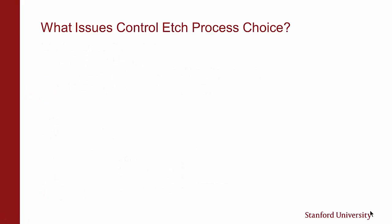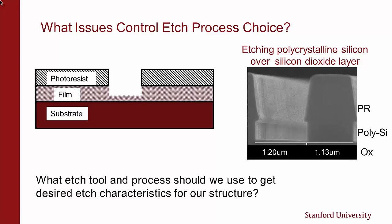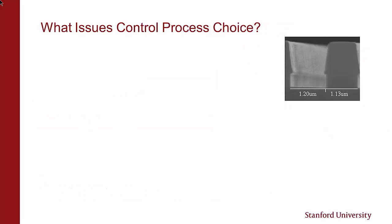What issues control etch process choice? Here we show a diagram shown previously of photoresist over a film — that would be an etch layer over substrate — in the polysilicon etch case. What etch tools and process should we use to get desired etch characteristics for our structure? So let's go into some of the issues.